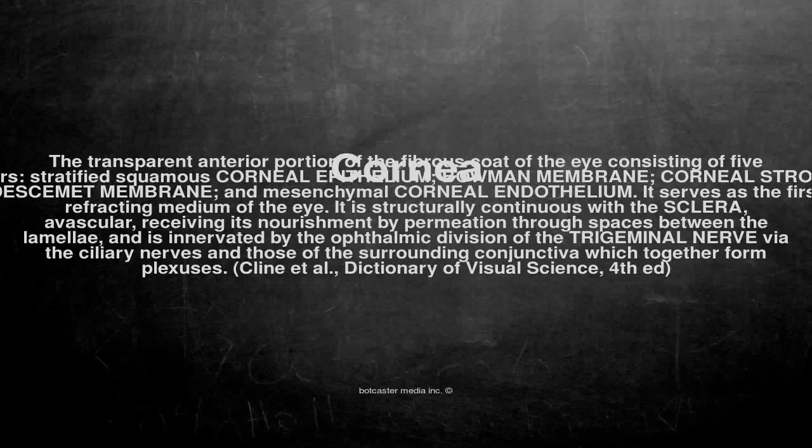Cornea: the transparent anterior portion of the fibrous coat of the eye consisting of five layers — stratified squamous corneal epithelium, Bowman membrane, corneal stroma, Descemet membrane, and mesenchymal corneal endothelium.